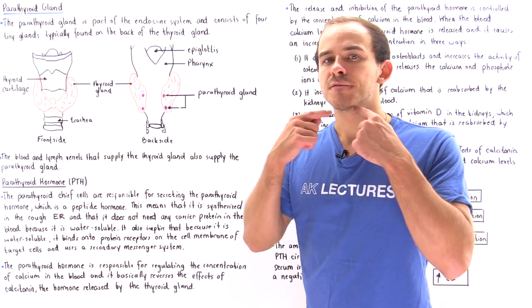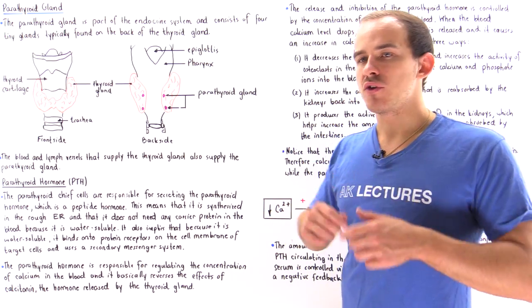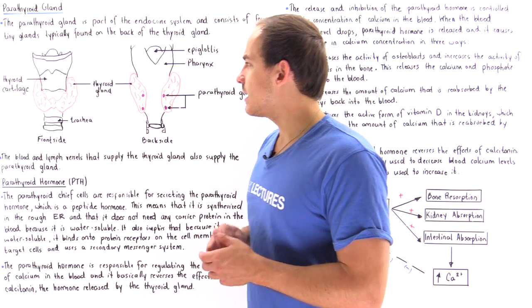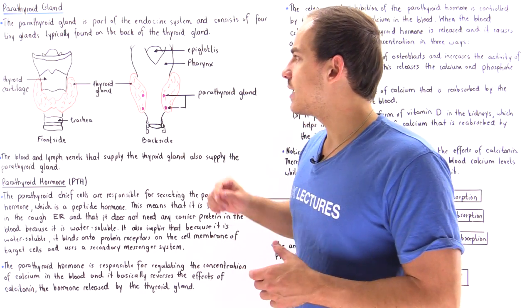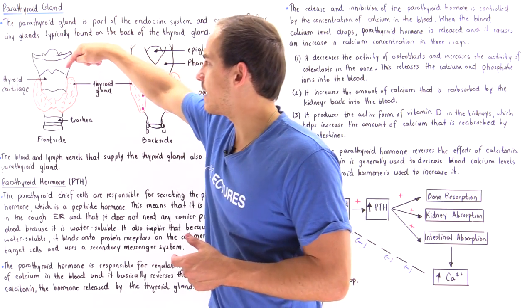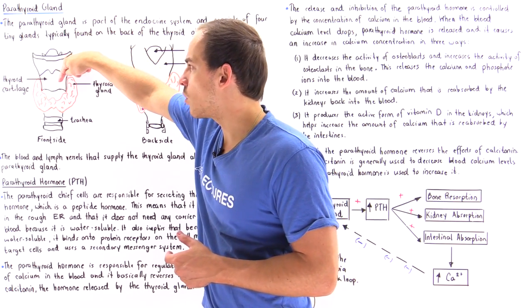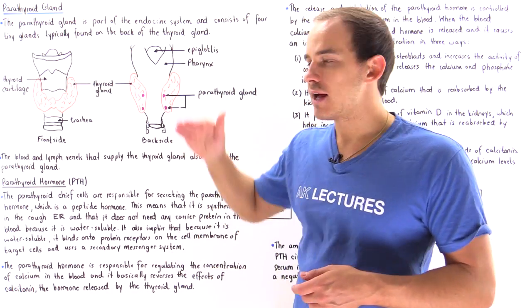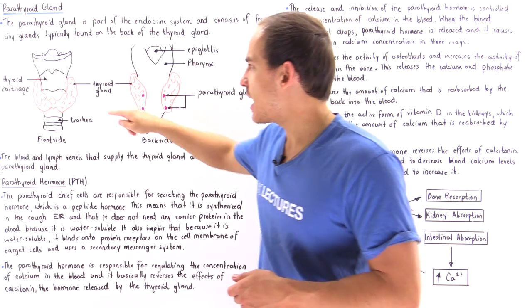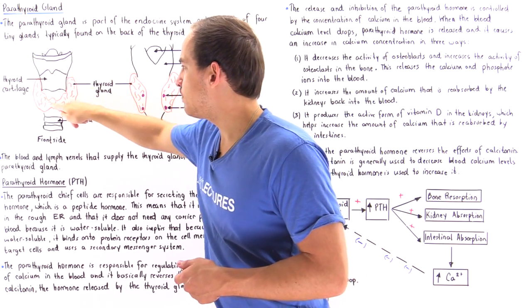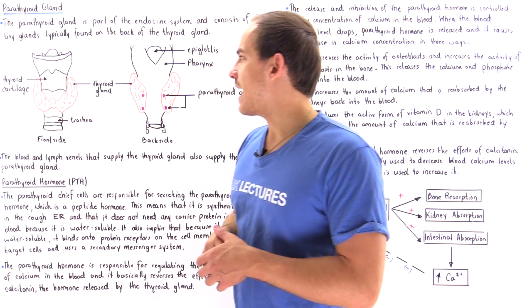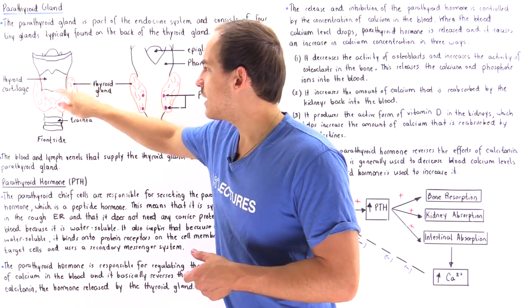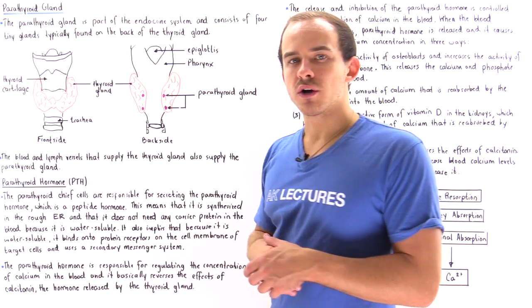If we examine the front portion of the windpipe, we basically get the following diagram. We have the thyroid cartilage, we have the Adam's apple right beneath that, and right beneath that, we have our thyroid gland that is shown in orange.